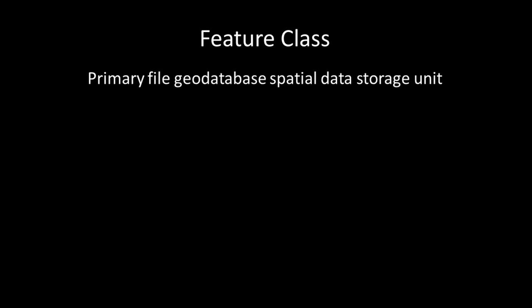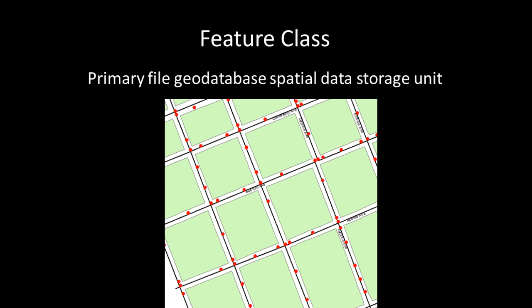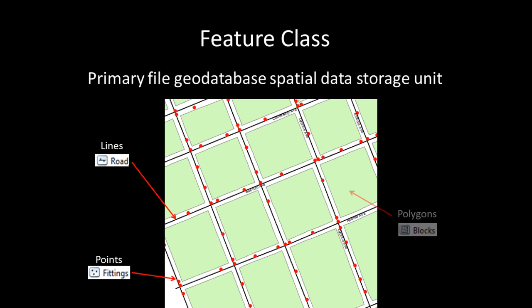A feature class is the primary storage unit for spatial data in the file geodatabase. Features within a feature class will all share the same spatial representation. For example, a feature class showing the locations of water fittings would be a point feature class, a feature class showing roads would be a line feature class, a feature class showing block boundaries would be a polygon feature class, and a feature class showing street names would be an annotation feature class.